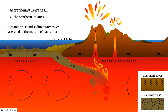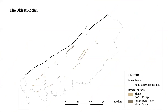Therefore, the oldest rocks of the Southern Uplands are fragments of oceanic crust and its immediate sedimentary cover, represented mostly by basalt pillow lavas that alternate with chert and are overlaid by shale. We met these rocks in last week's session when we talked about the Ballantrae complex. Let's have a closer look at them and see how they formed.